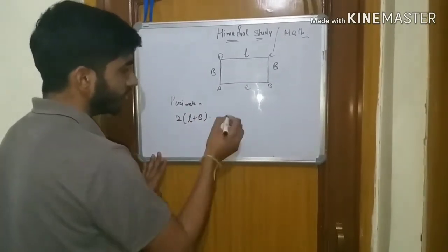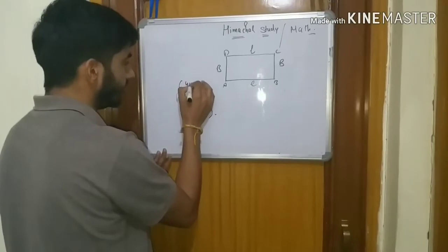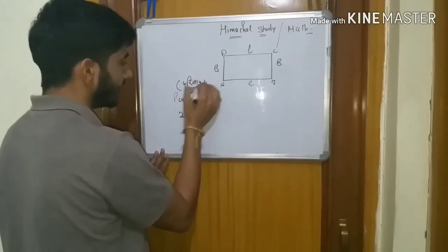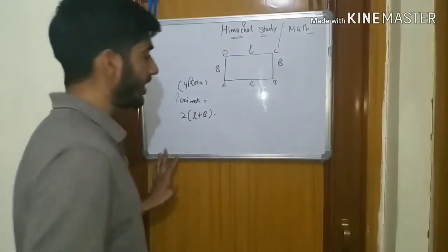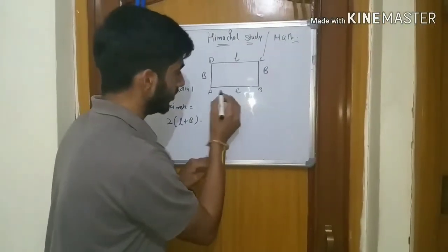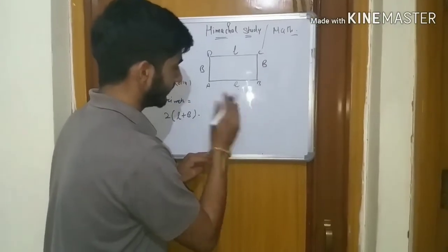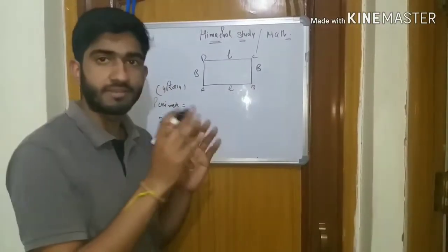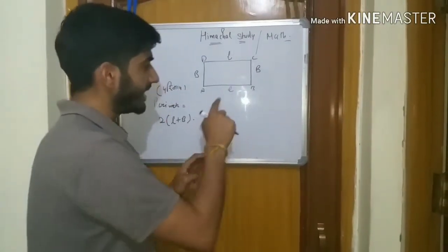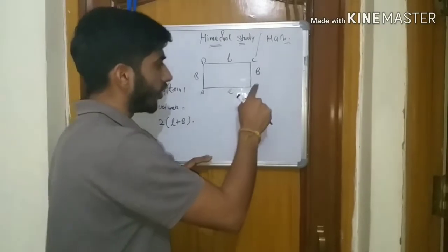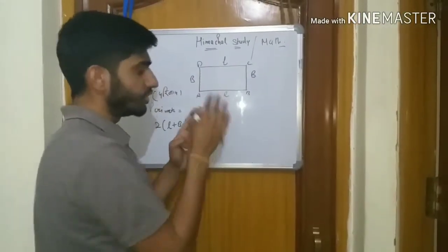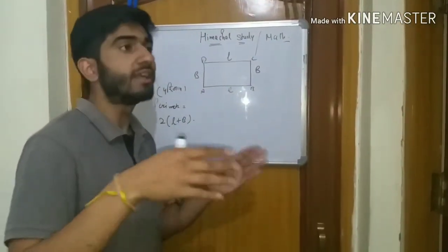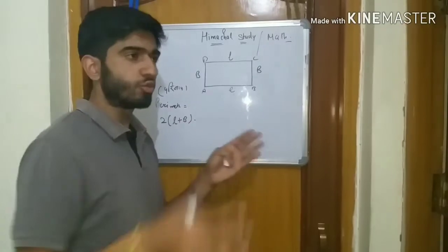Now, I'll refer to this as perimeter, or 'paridhi' in Hindi. Perimeter is basically the sum of all side lengths — that means the sum of the boundary. We add up the sum of the boundary.